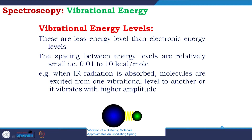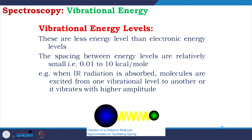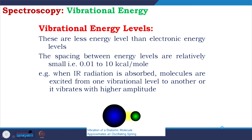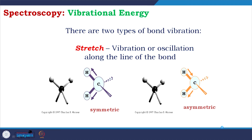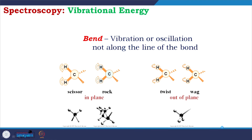Vibrational energy levels have smaller spacing than electronic energy levels — 0.01 to 10 kcal/mol. When IR radiation is absorbed, molecules are excited from one vibrational level to another, vibrating with higher amplitude. A diatomic molecule approximates an oscillating spring. There are two types of bond vibrations: stretching vibrations along the line of the bond — symmetric and asymmetric — and bending vibrations not along the bond line.